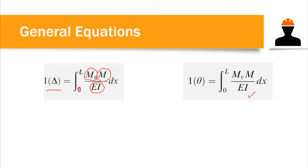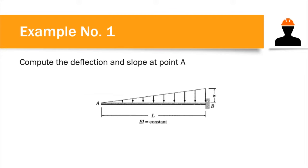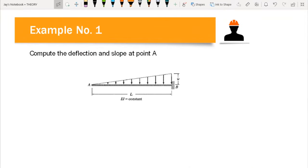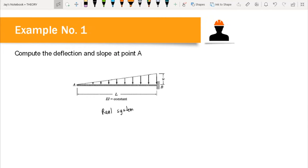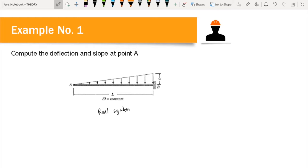Let's solve Example 1 to better understand the concept. We are asked to compute the deflection and slope at point A of a cantilever beam with a triangular load. Since we are computing deflection, we place a one-unit concentrated load at point A on the virtual system. Since we have a variable length L and a variable triangular load, our answer will be in terms of w and L.